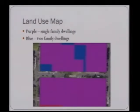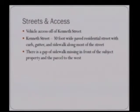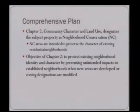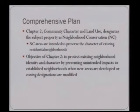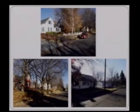This map denotes the land use in the area with all 25 lots shown. Purple denotes single-family dwellings and blue is two-family dwellings. Vehicle access to the subject property is off Kenneth Street, a 30-foot-wide paved residential street with curb, gutter, and sidewalk along most of the street. There is a gap of sidewalk missing in front of the subject property and the parcel to the west. Relating this application to the comprehensive plan, Chapter 2 — Community Character and Land Use — designates the subject property as neighborhood conservation, intended to preserve the character of existing residential neighborhoods.